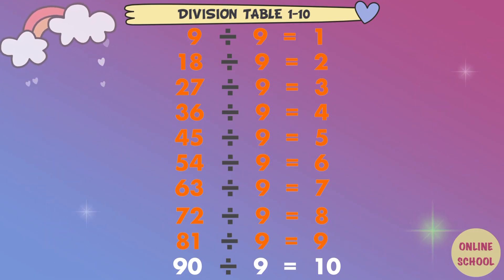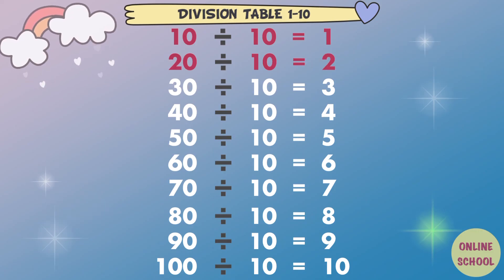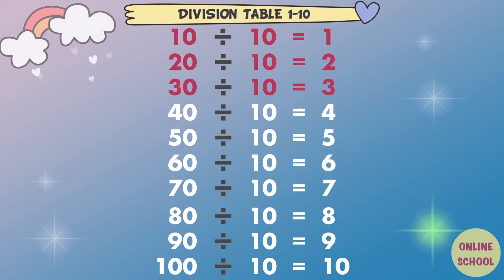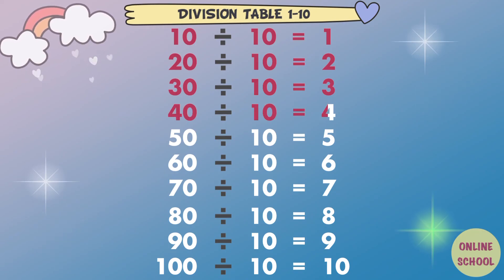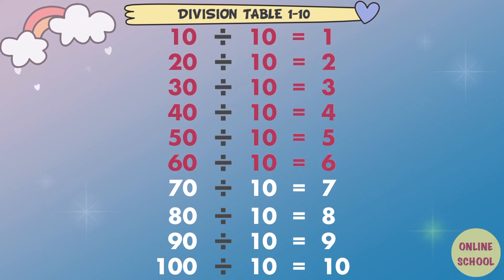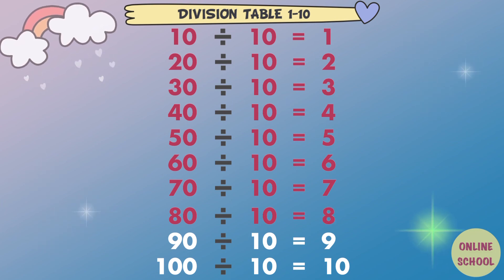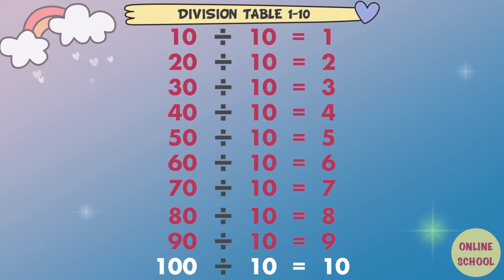81 divided by 9 equals 9. 90 divided by 9 equals 10. Divided by 10. 10 divided by 10 equals 1. 20 divided by 10 equals 2. 30 divided by 10 equals 3. 40 divided by 10 equals 4. 50 divided by 10 equals 5. 60 divided by 10 equals 6. 70 divided by 10 equals 7. 80 divided by 10 equals 8. 90 divided by 10 equals 9. 100 divided by 10 equals 10.